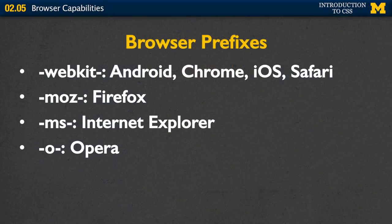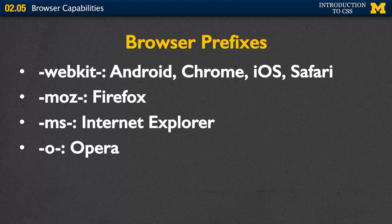You've been using different properties and the browser has hopefully just been working. But now for some of those properties, you're going to want to add a prefix in front of it, such as webkit, moz, ms, or o for Opera. Each one of these prefixes says, hey, if you're on this particular browser, this is what I need you to do to get the look that the designer is going for.